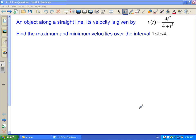Welcome. In this video, we're going to go through the solution to one of the additional questions from unit 11-12. This question involves using the quotient rule in combination with the first derivative test. Here's our situation: An object moves along a straight line. Its velocity is given by v(t) = 4t² / (4 + t³). We want to find the maximum and minimum velocities over the interval 1 ≤ t ≤ 4.